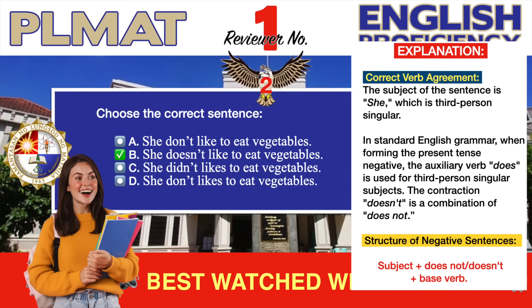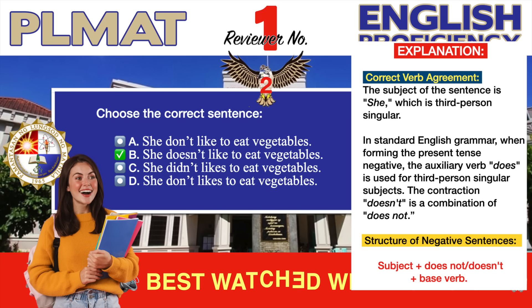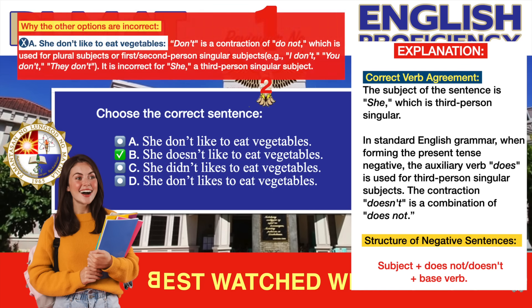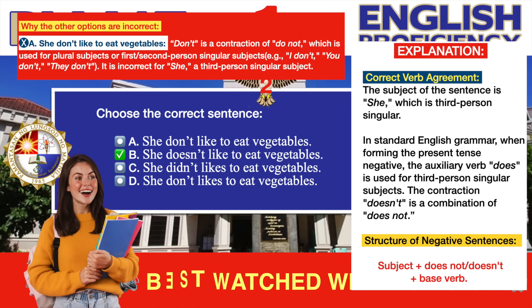The subject of the sentence is 'she,' which is third person singular. In standard English grammar, when forming the present tense negative, the auxiliary verb 'does' is used for third person singular subjects. The contraction 'doesn't' is a combination of 'does not.' Negative sentences in the present tense for third person singular should follow this structure: Subject plus does not or doesn't plus base verb. Therefore, the correct sentence is 'She doesn't like to eat vegetables.' Option A is incorrect because 'don't' is used for plural or first/second person singular subjects such as I don't, you don't, they don't — it is incorrect for 'she,' a third person singular subject.